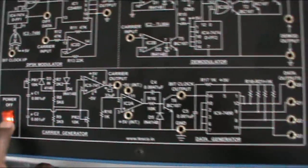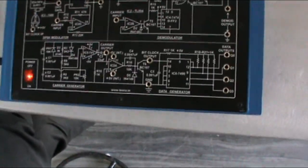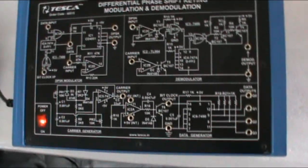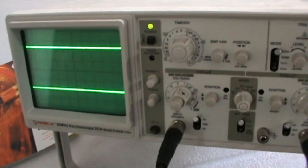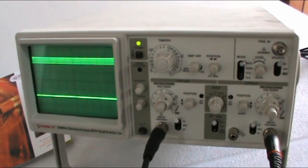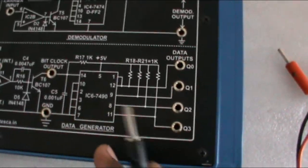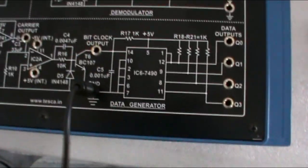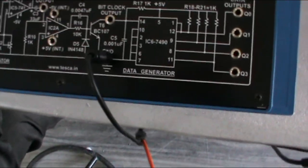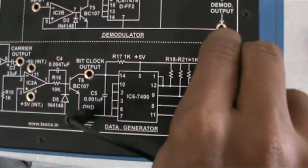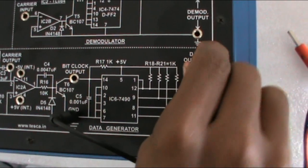Switch on the trainer. We can observe the different signals with the help of a CRO. This is the CRO and oscilloscope. This is the ground lead of this CRO. You can connect this ground lead to any one ground terminal of the panel. These are the data outputs; we can observe this data output with the help of this oscilloscope.